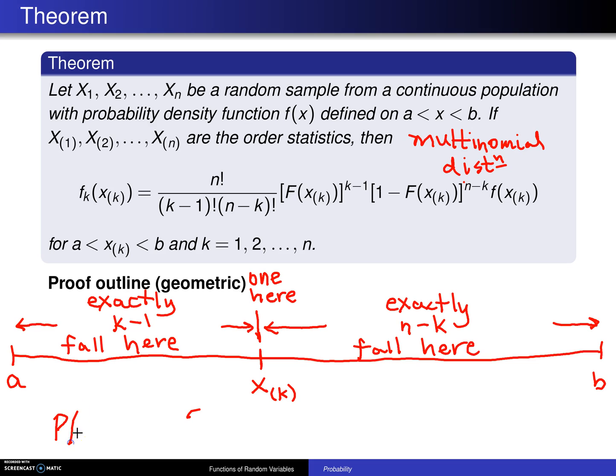Next, the probability of falling here, if you were to take any observation and try to estimate the probability that they will fall between a and x sub k, you would say that is the probability fx of x evaluated at x sub k. By the way, that shows up right here.